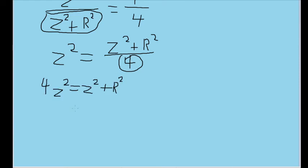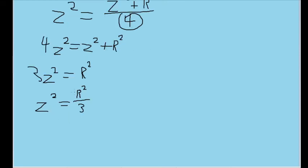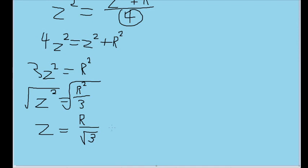And now we can put the z squareds together by subtracting this 1 z squared from both sides, so that we'll end up with 3 z squared on the left. Now I have divided both sides by 3 to get z squared on its own. And then we take the square root of this to actually solve for z. And now we can see that z is equal to r divided by the square root of 3.